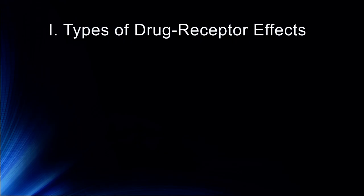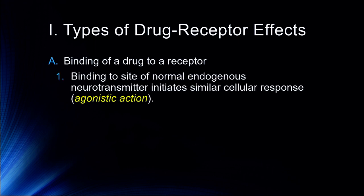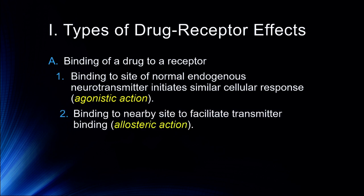There are different types of drug receptor effects. The first is that drugs can bind to a particular receptor. Binding to a site of a normal endogenous neurotransmitter can initiate a similar cellular response — what we call an agonist action. Essentially, the drug is taking the place of that normally internally produced neurotransmitter. Similarly, they can bind to a nearby site to facilitate neurotransmitter binding, which is called an allosteric action.